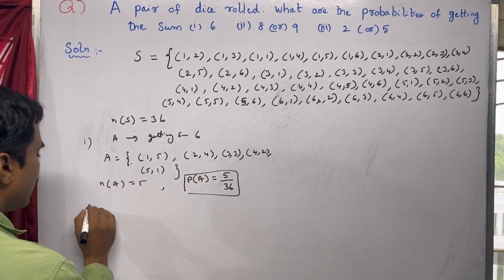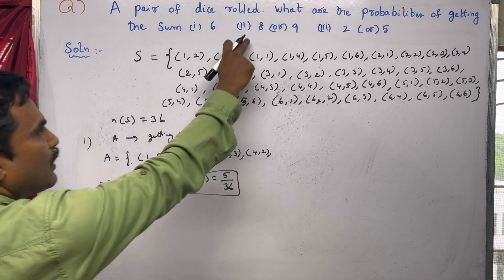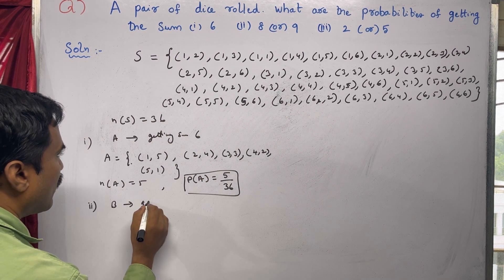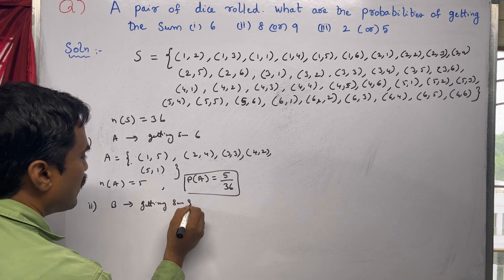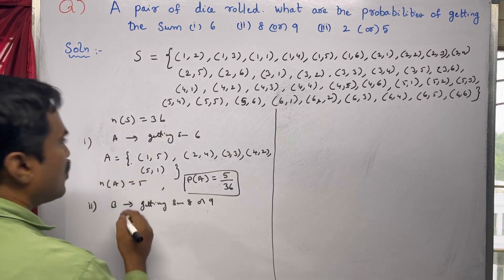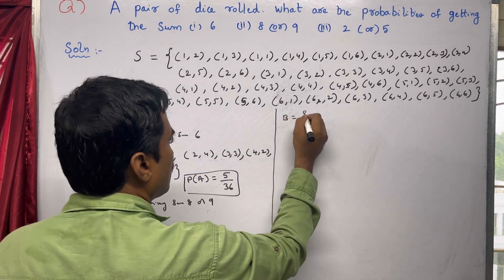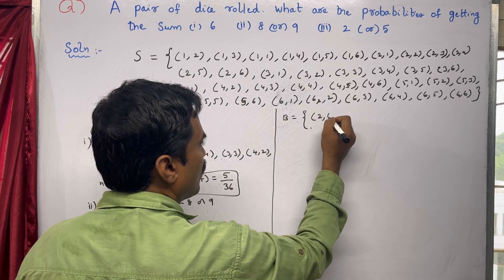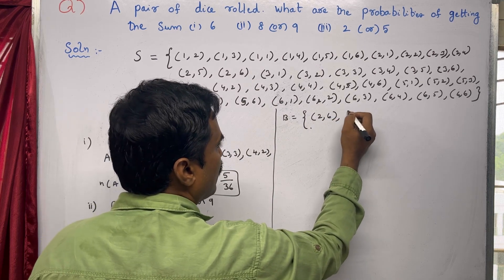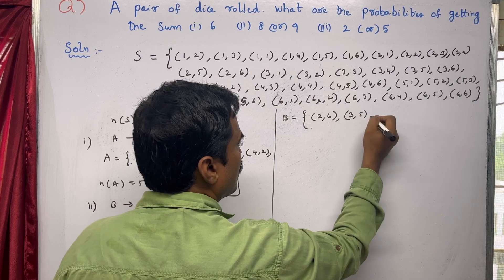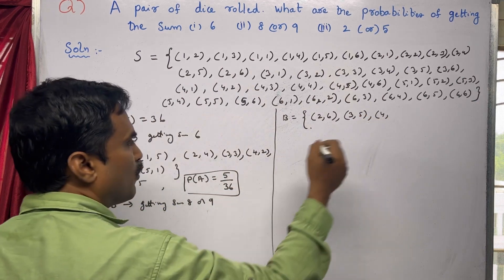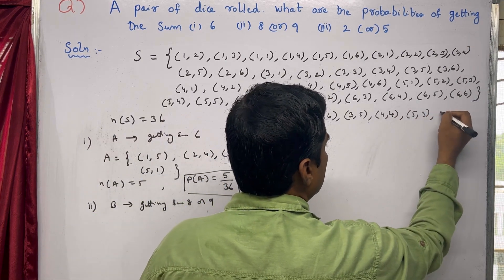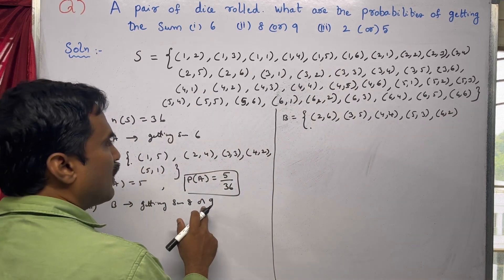Now for the second part, we define event B as getting a sum of 8 or 9. For sum 8: (2,6), (3,5), (4,4), (5,3), (6,2) — that is five outcomes for sum 8.